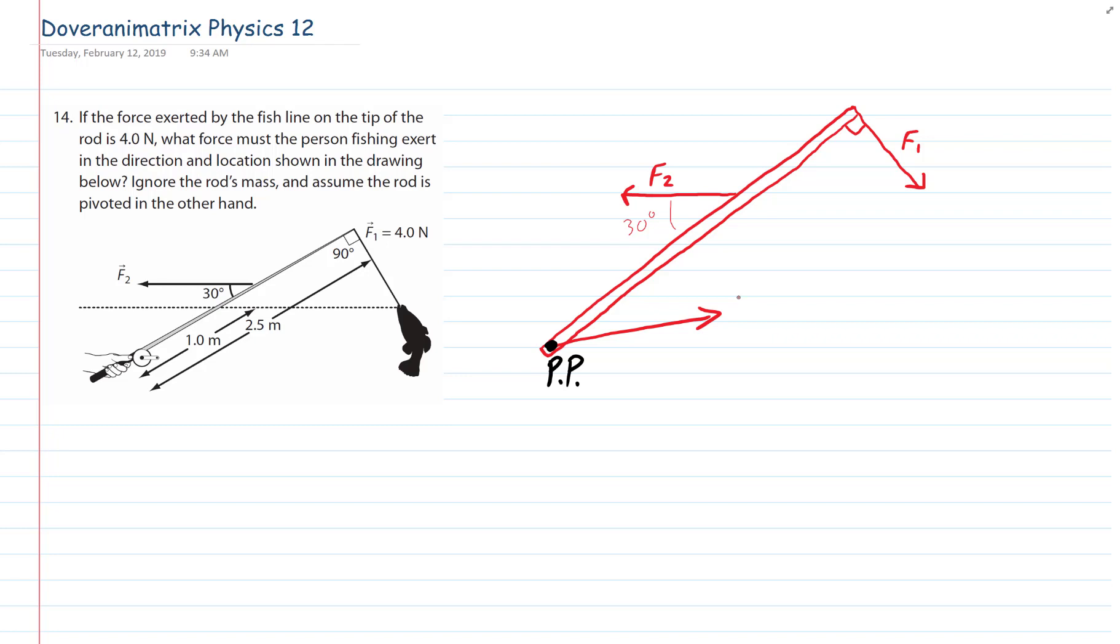There definitely has to be some sort of upward force. Because this one here is a downward force. Down and to the right. So it needs some sort of upward. And because we're putting the pivot point here, that force, the other hand, we don't have to worry about in the torque formula.